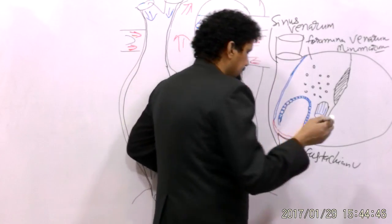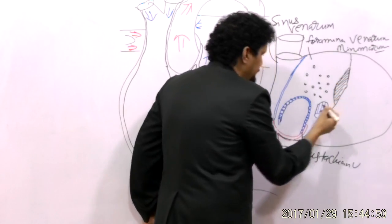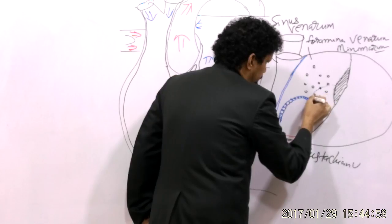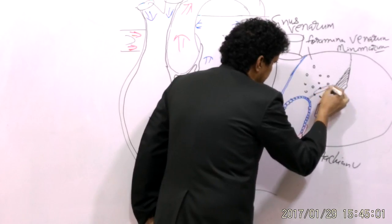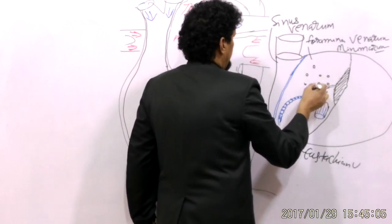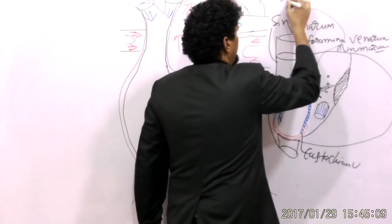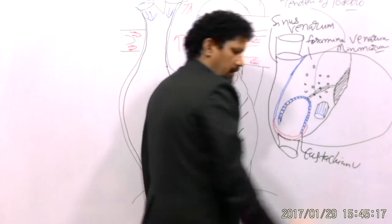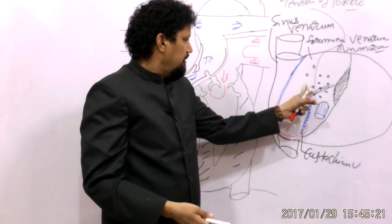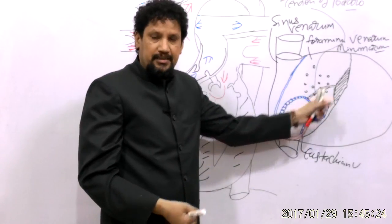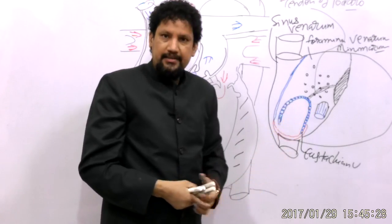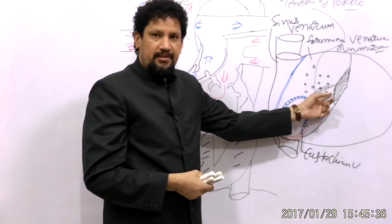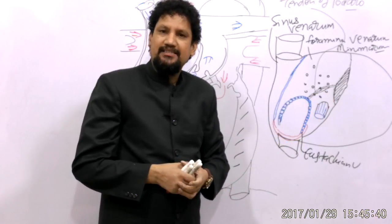Between the base of the septal cusp and the fossa ovalis there is a sub-endocardial ridge known as the tendon of Todaro. Between the tendon of Todaro, the base of the septal cusp, and the opening of the coronary sinus, there is a triangle known as Koch's triangle.